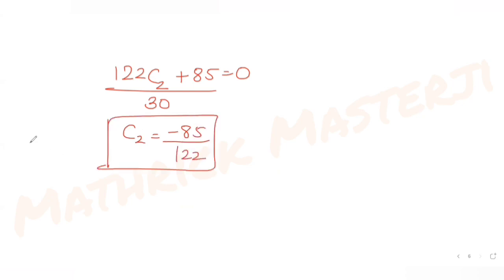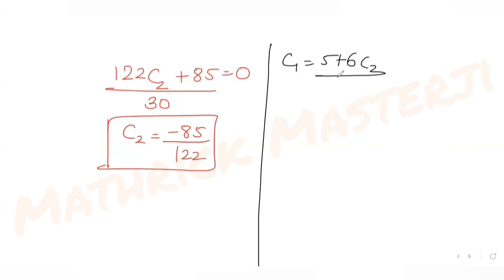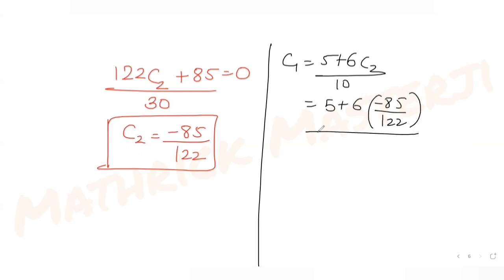With c2 = −85/122, we find c1 = (5 + 6·(−85/122)) / 10. Computing the numerator: 5·122 = 610, minus 6·85 = 510, gives 100. So c1 = 100 / (122·10) = 10/122.